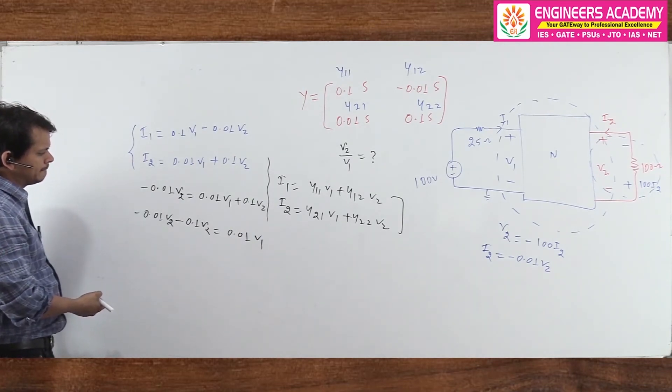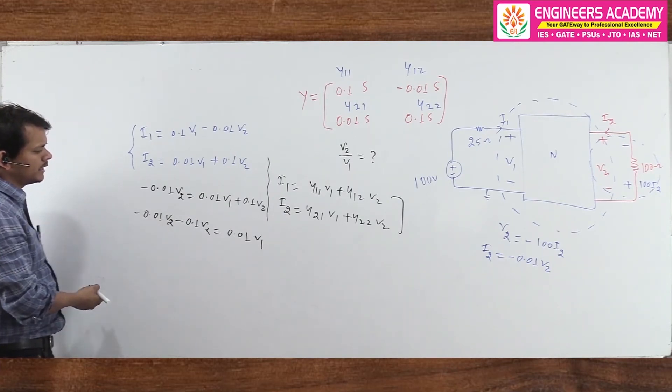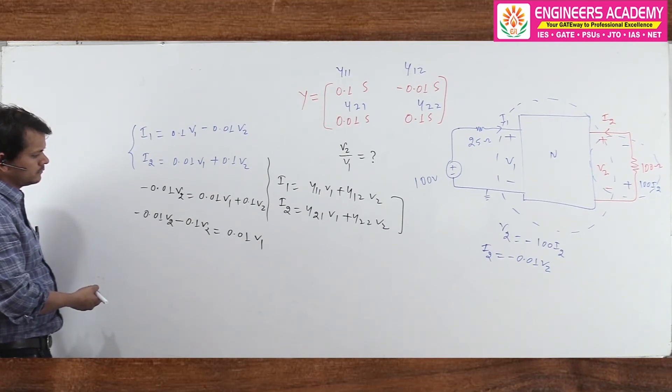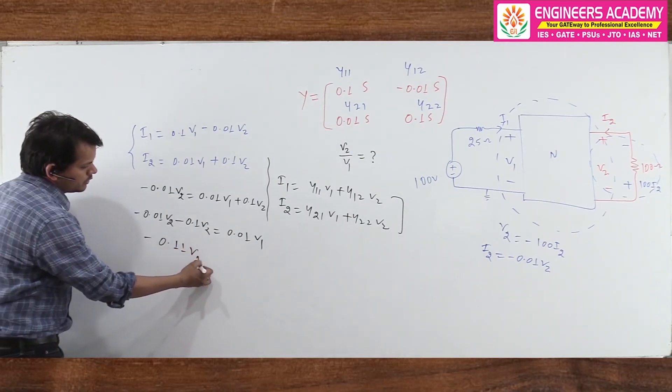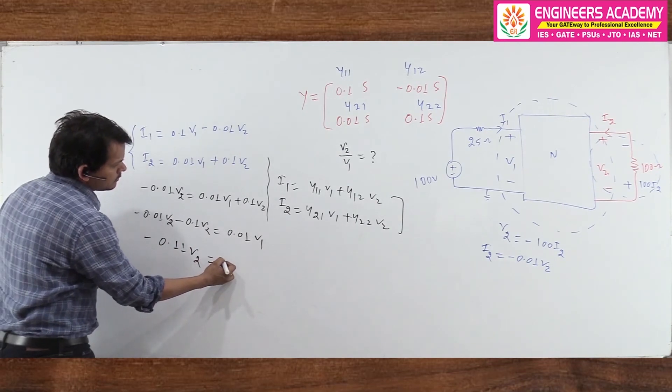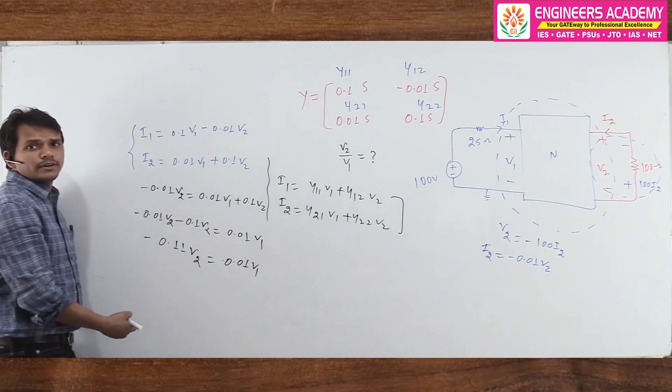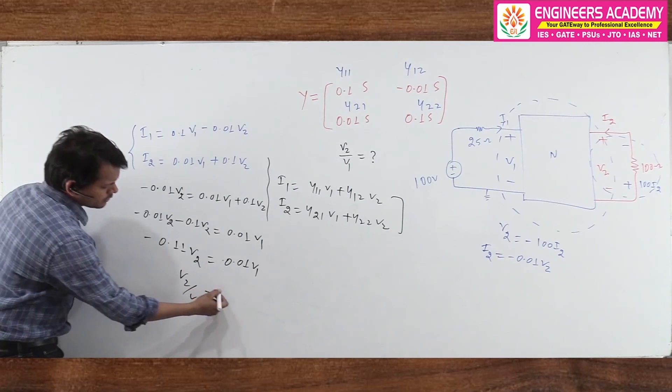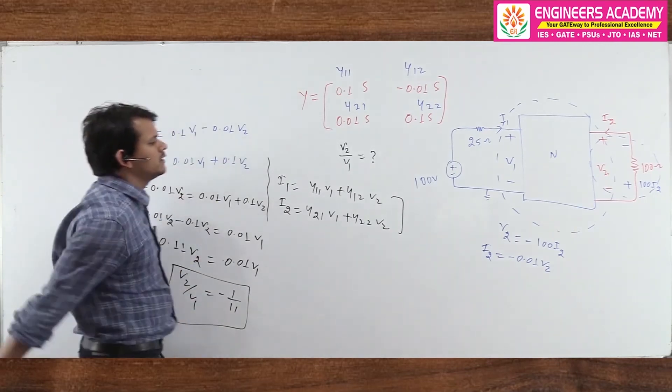If I just add both of them, what happens? It should be 0.01 and minus 0.1, if I try to solve it, what happens? It should be minus 0.11*V2, and it should be plus 0.01*V1. Whenever I try to solve this, V2 by V1 I got, 0.01 cancels out, it should be minus 1 by 11. So the answer of this question is minus 1 by 11.